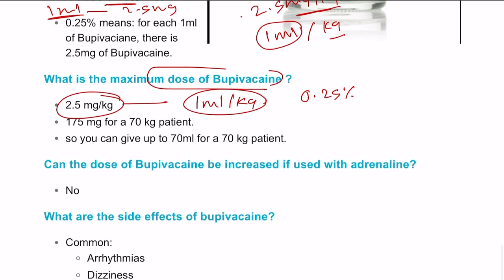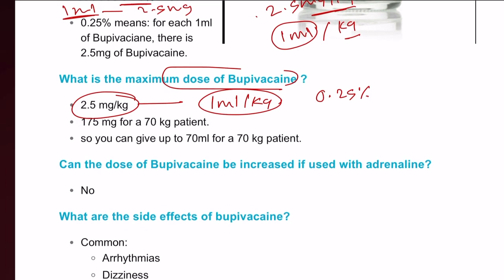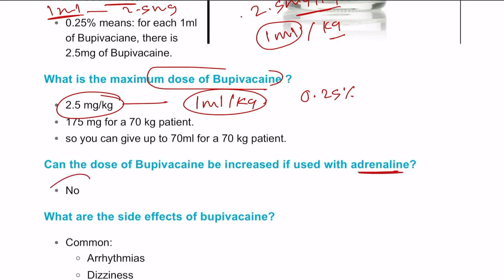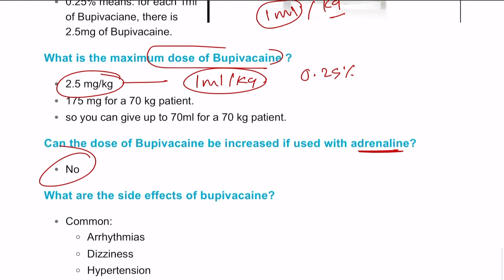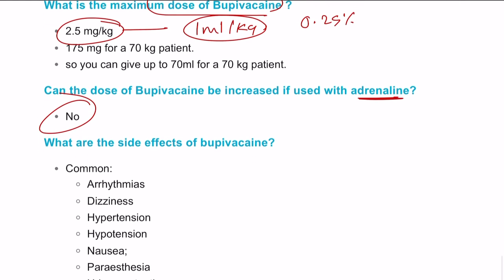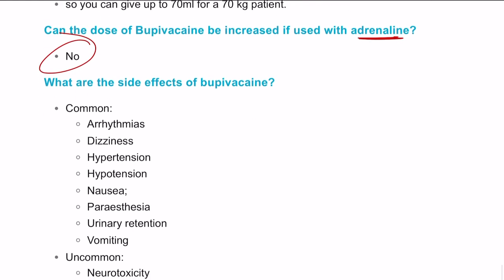The side effects of bupivacaine — which you probably know — include arrhythmia and dizziness if it becomes systemically absorbed. Thank you.